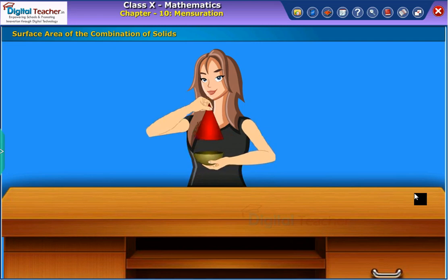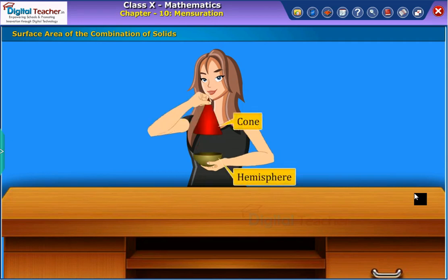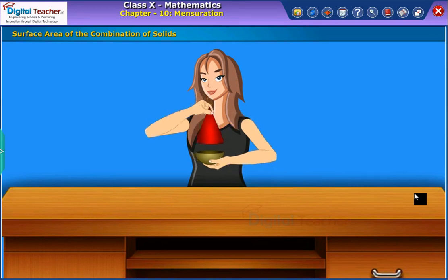Varsha wants to make a toy by combining a hemisphere and a cone. So, first she takes a cone and hemisphere and brings their flat faces together, such that the radius of the cone equals the radius of the hemisphere. For the toy to have a smooth surface, she made a round bottom toy.